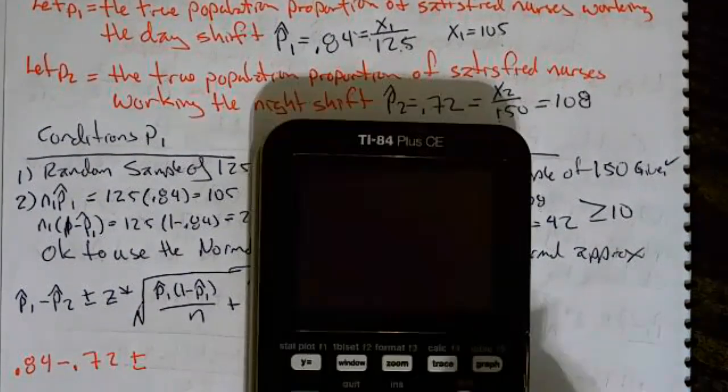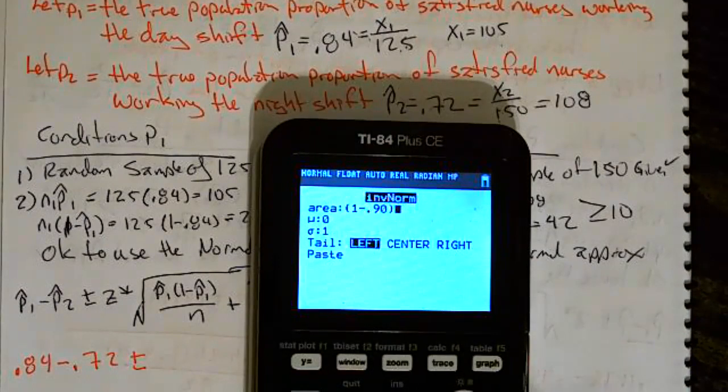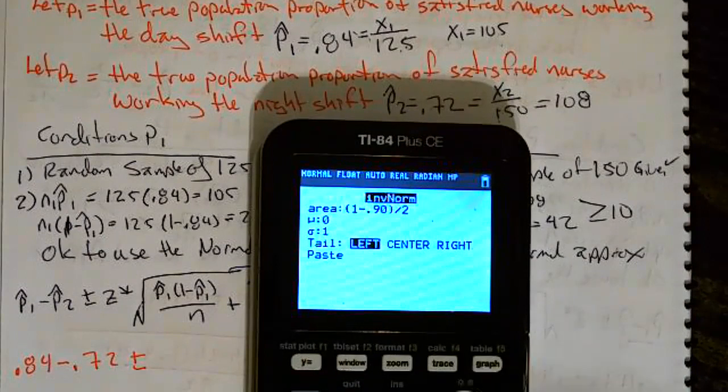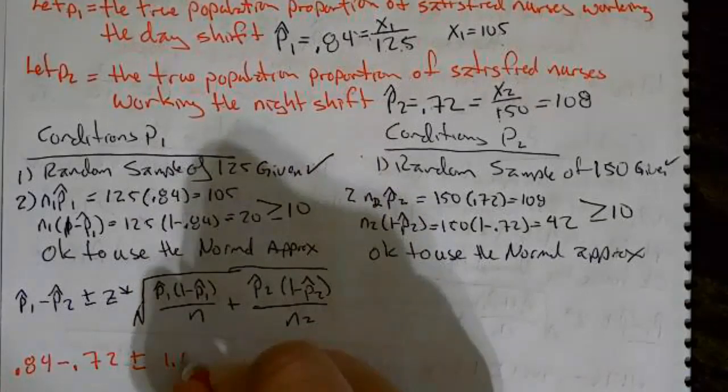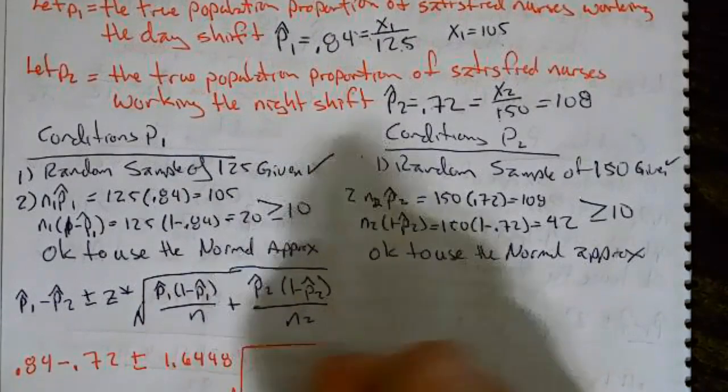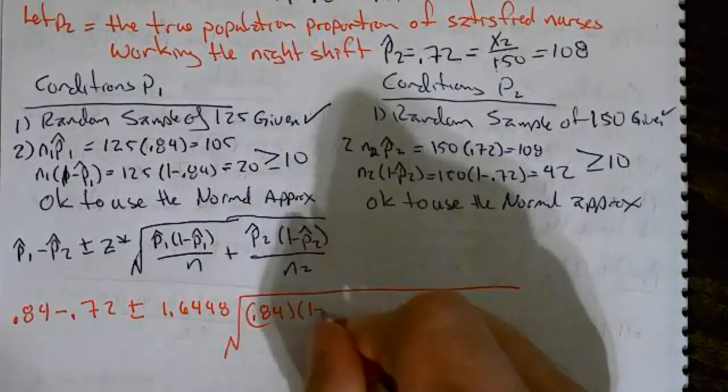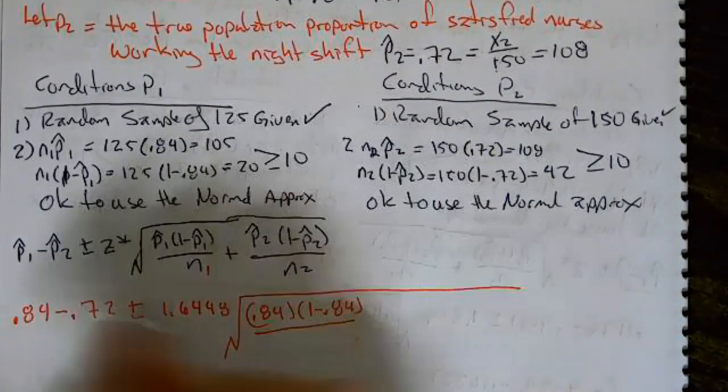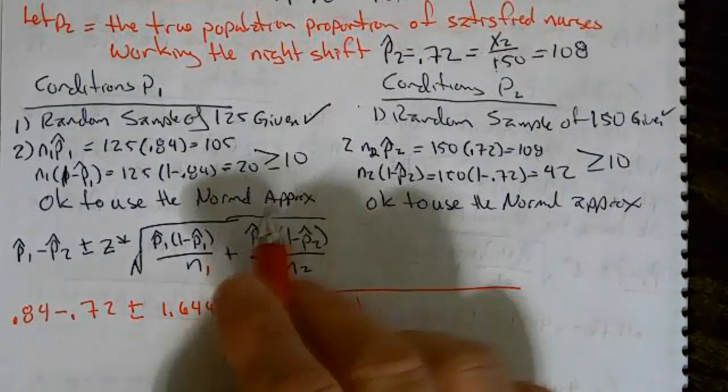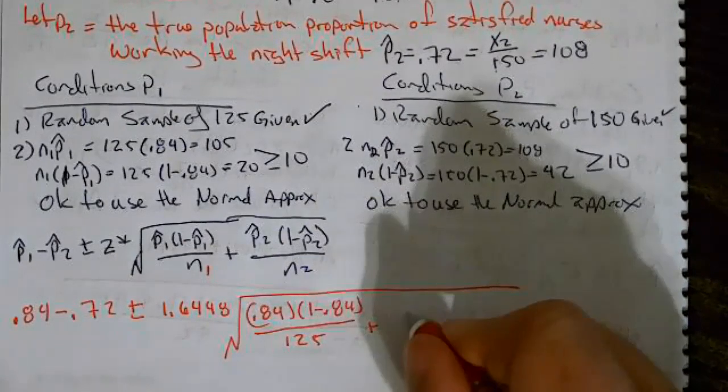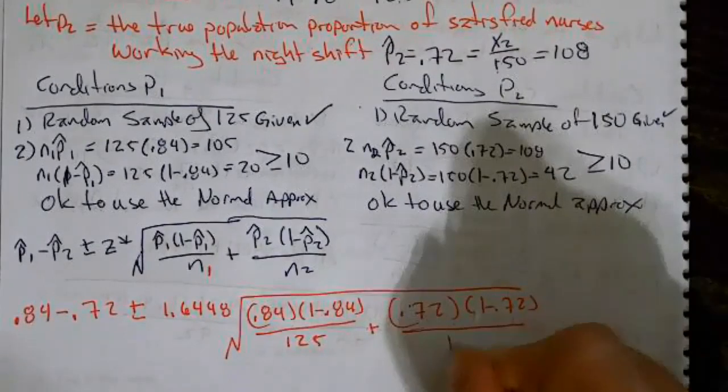So, 0.84 minus 0.72 plus or minus. Okay, we've got to calculate Z star. They wanted it at 90%. So, the second Vars inverse norm parenthesis 1 minus 0.90 close parenthesis divided by 2 mean of 0 standard deviation of 1. And I end up getting 1.6448. Really big, long radical. And for P hat 1, we had 0.84. This is 1 minus 0.84 over 125 plus 0.72 times 1 minus 0.72 all over 150.